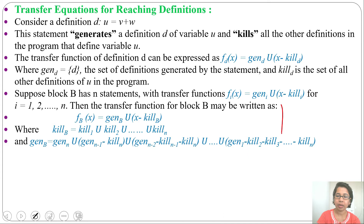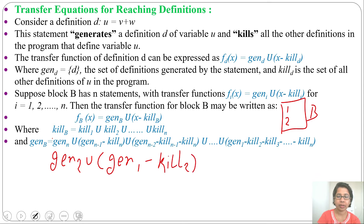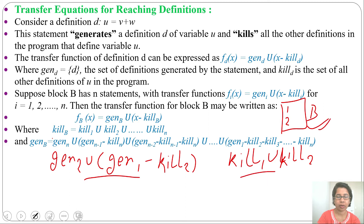Let one block contain two definitions, 1 and 2. Then what will be GEN of this block? GEN of the block will be GEN of the last statement. Since the last statement is 2, it will be: GEN(2) ∪ (GEN(1) − KILL(2)). And KILL(B) will be KILL(1) ∪ KILL(2).